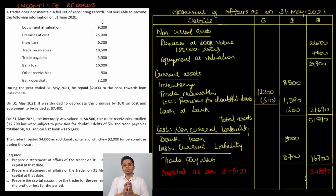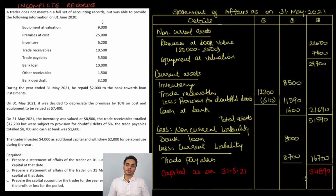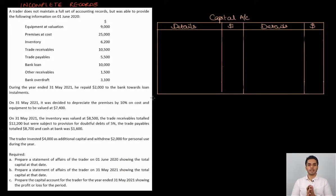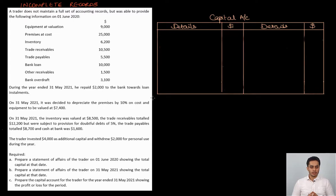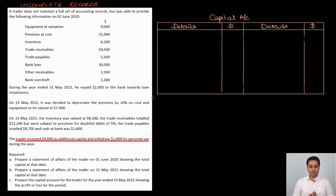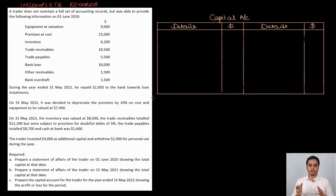We have our opening capital and our closing capital, so we can now prepare a capital account to calculate the profit or loss for the year. The opening capital is written as a balance brought down on the credit side. The closing capital on 31st May 2021 is written as a balance carried down on the debit side. Additionally, the trader invested 4,000 of extra capital (credit side) and withdrew 2,000 as drawings (debit side).